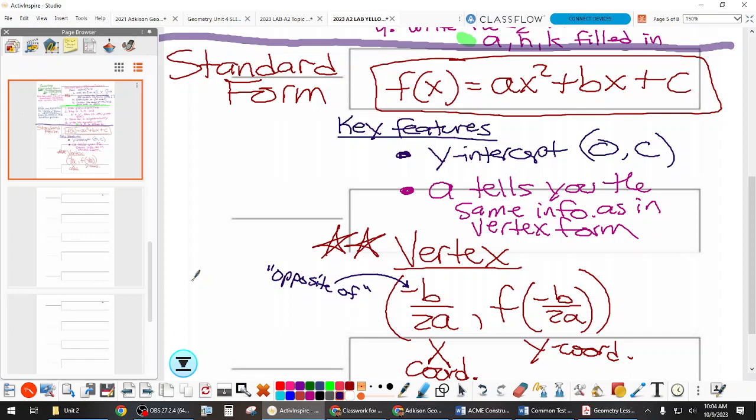We cannot see the vertex just by looking at standard form, but we can find it by dividing the opposite of B or negative B. I would rather say opposite of B, because it's not saying that this is always going to be a negative number. It's negative and then whatever B is.